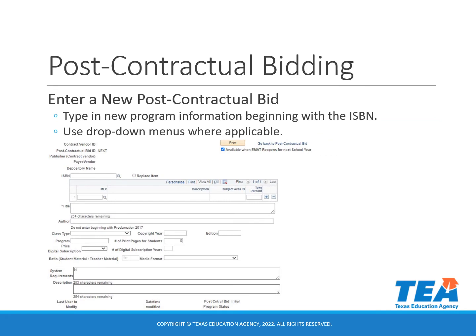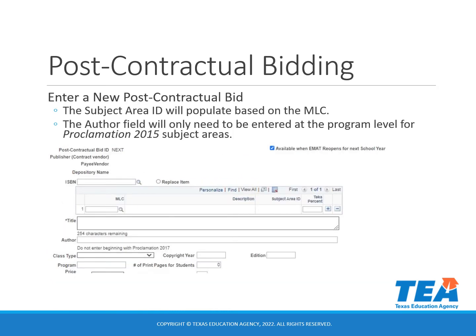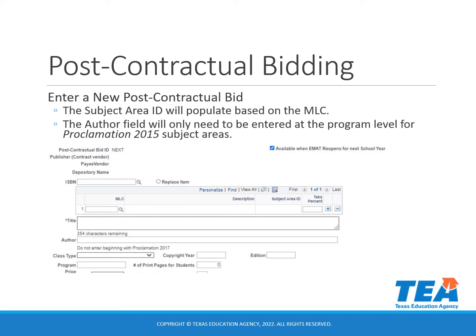The top section of the post-contractual bid will contain program information. You will begin by typing in the new program ISBN, then fill in the rest of the information using drop-down menus when applicable. The subject area ID or description will populate based on the MLC you select. The multiple list codes or MLCs can be found on the TEA website by hovering over the Academics tab and clicking on Instructional Materials. Click the down arrow next to Adopted Materials at the bottom of the Instructional Materials webpage to view the MLC document link. The MLC document is updated yearly. The author field will only need to be entered at the program level for Proclamation 2015 subject areas.